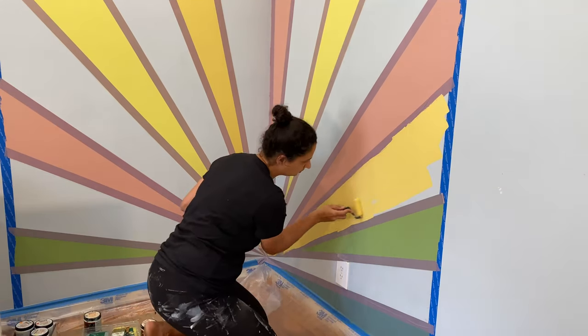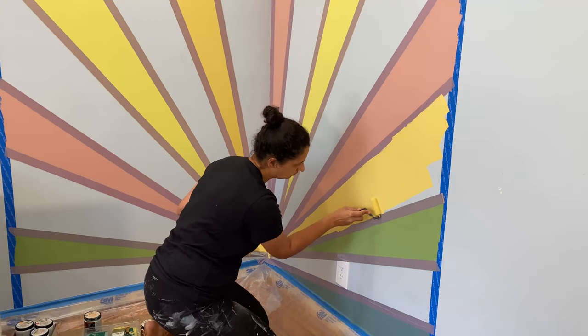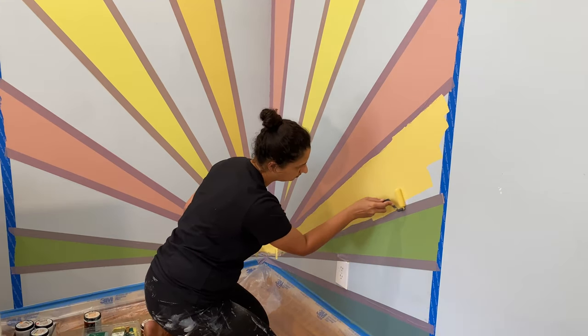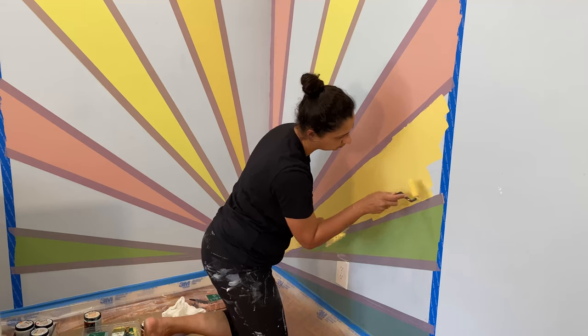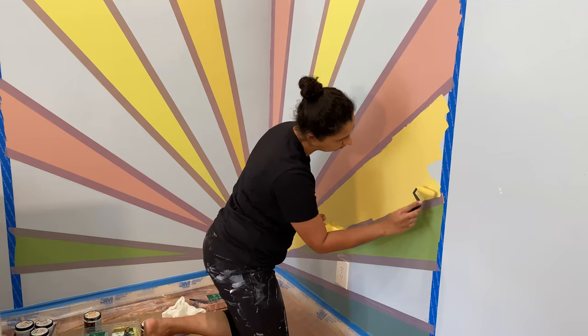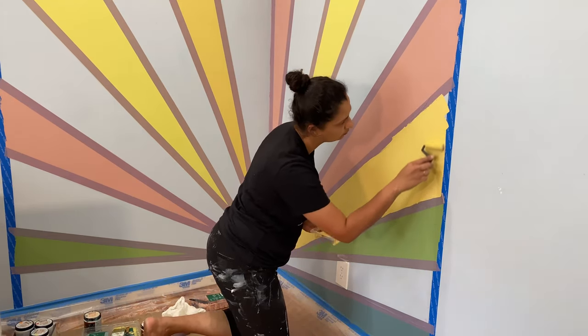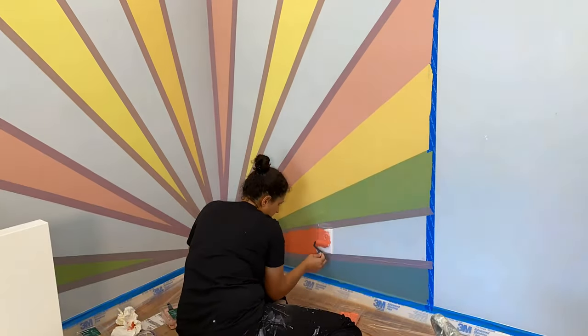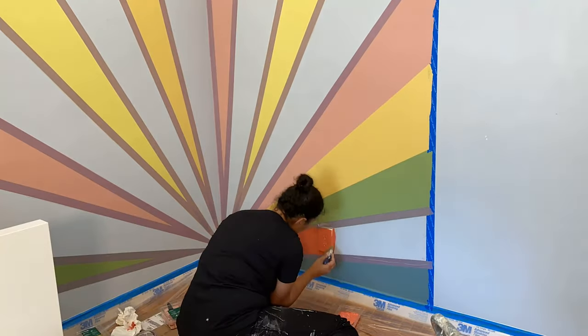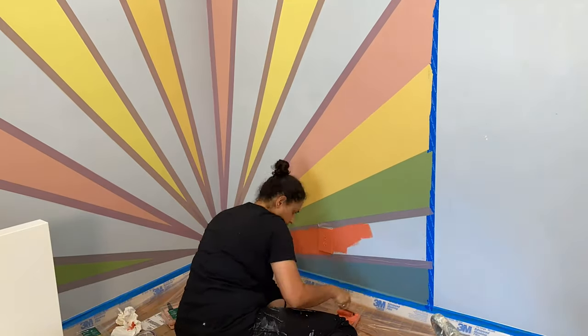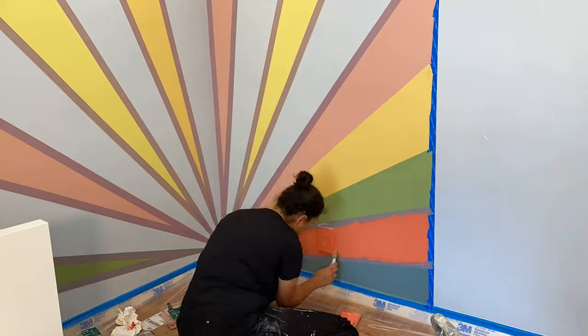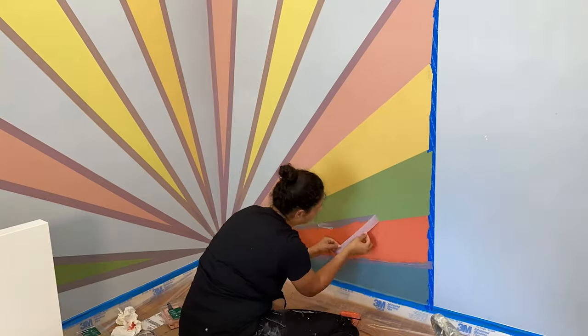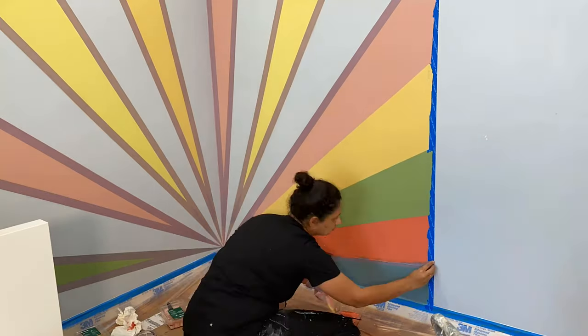And then I just went ahead and painted the next set of colors. Now here is one little pro tip. When you decide on the colors that you're going to use in the sequence, take a little picture of it so you can remember exactly which color goes where. I actually came back and painted a couple of those yellow stripes gray because I thought that was a little bit too much of yellow. Isn't it awesome how the paintable plug covers help completely disguise those plug points inside the pattern.